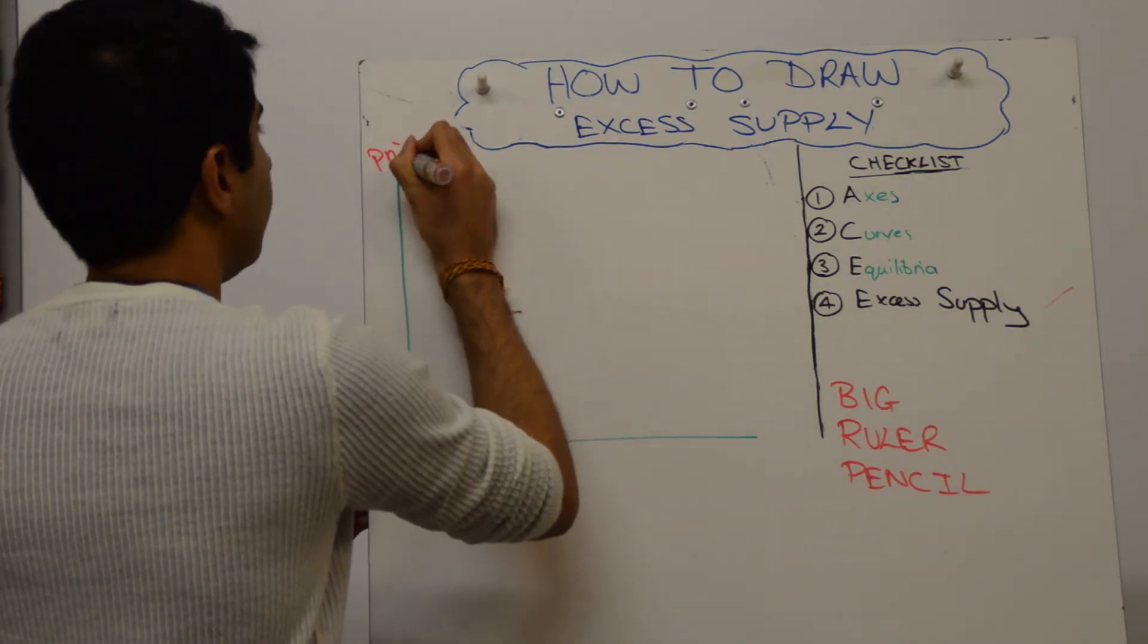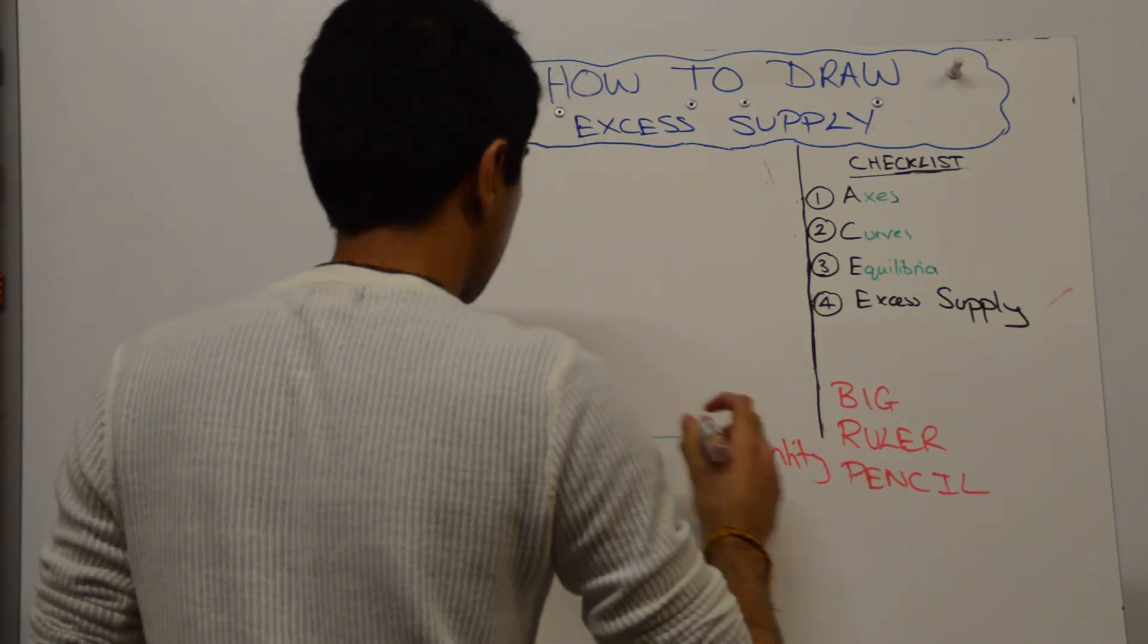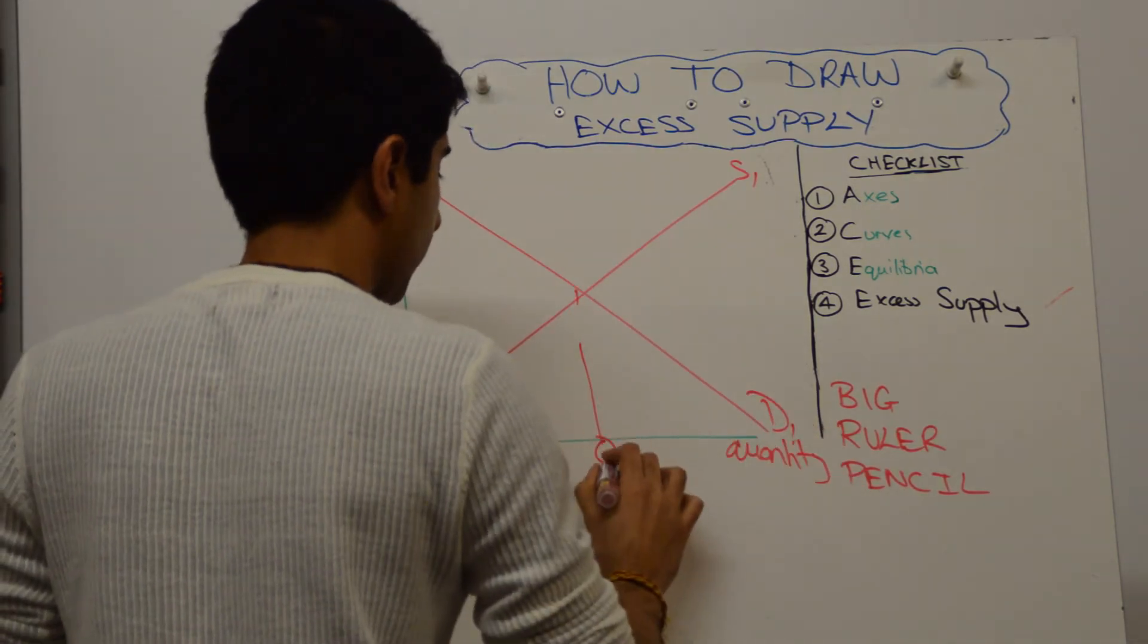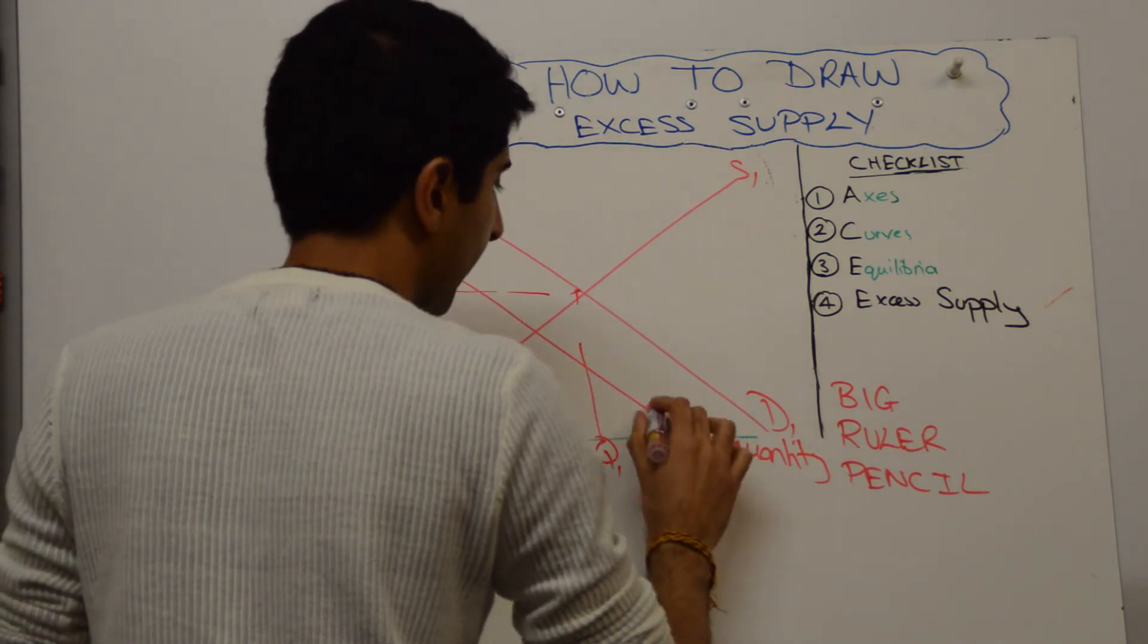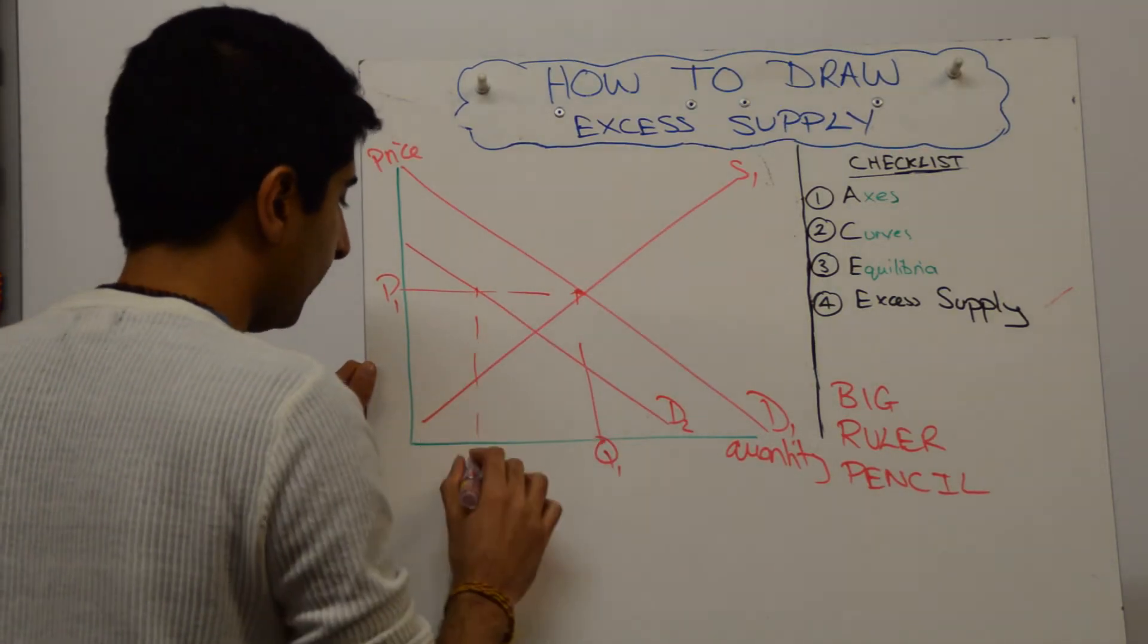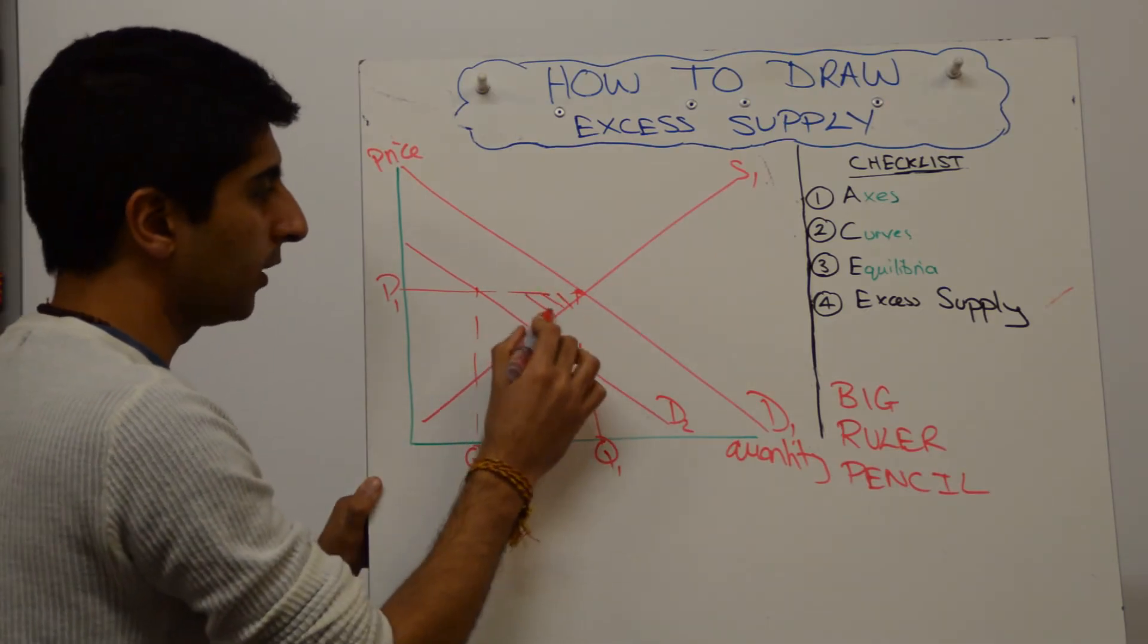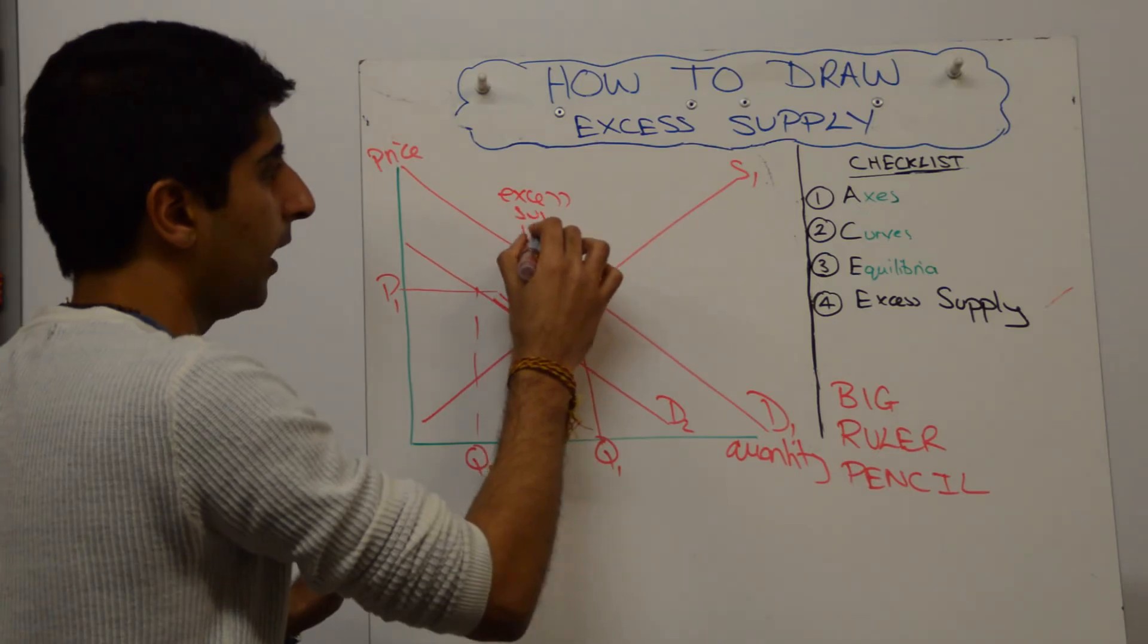We need to label our axis again. So price and quantity. Let's show equilibrium. Demand and supply. Equilibrium price and quantity here. Let's shift demand to the left from D1 to D2. At the same price, supply remains here at Q1, but now our new demand is here at Qd. Supply is higher than demand. This triangle, just like we did before, tells us that. We can label that as the excess supply.